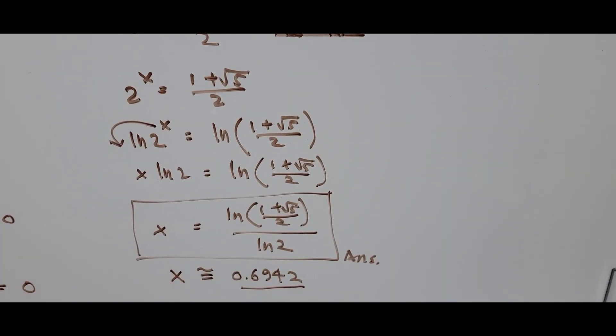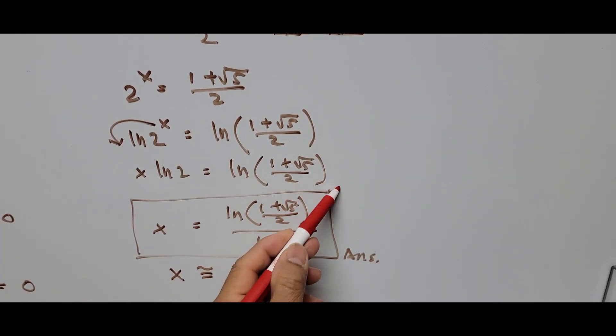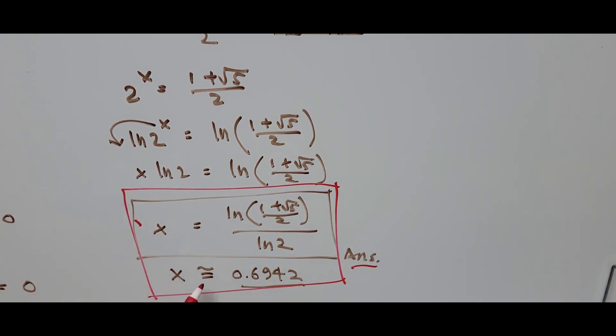We have confirmed our answer — the value of x is correct. This is our final answer: the exact value is x = ln((1 + √5)/2) / ln(2), and the approximate value is 0.6942.